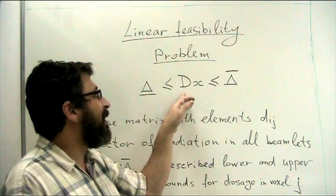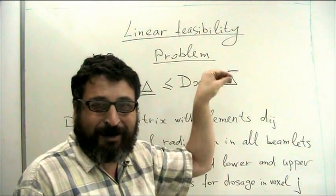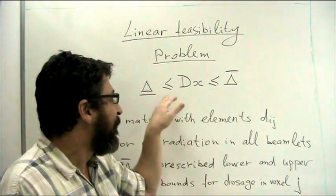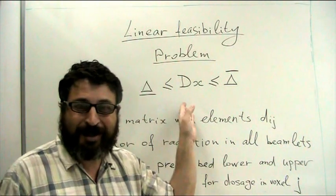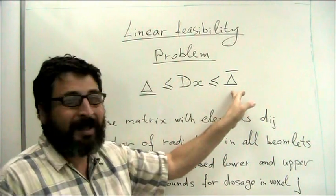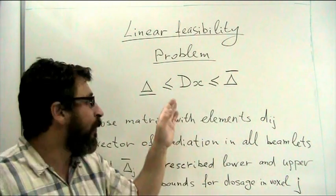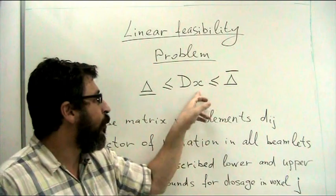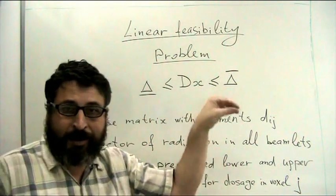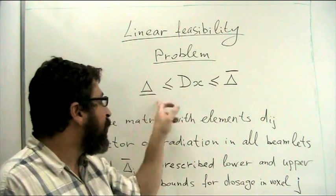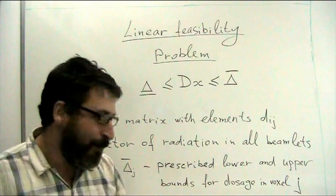So this is a linear feasibility problem. It's like mathematical programming usually has objective function and constraints. And here we don't write, at the moment, objective function. We only define constraints. And if we found such a plan, our plan is X, how many radiation to put in every beamlet, which satisfies constraints in optimization, it's called feasible plan.